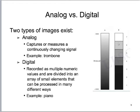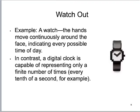A digital signal is going to be something that has a discrete numerical value, meaning it's been recorded as small elements that can be processed in various ways. Discrete means that only one thing represents that one thing — an example would be a piano. Another way to look at this distinction is different types of ways of telling time. An old-fashioned wristwatch has hands that move continuously around the face, indicating every possible time of day, versus a digital clock which can only represent finite numbers of times, like every tenth of a second.